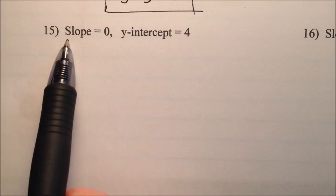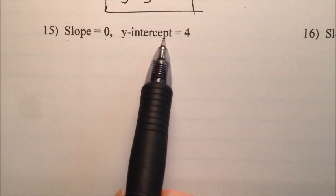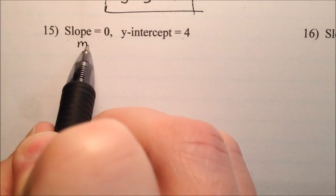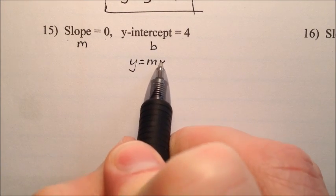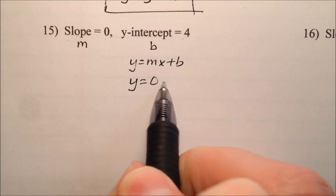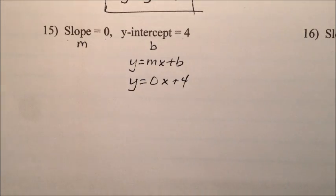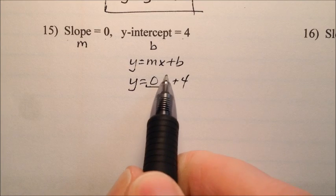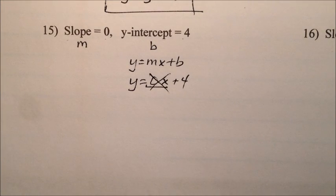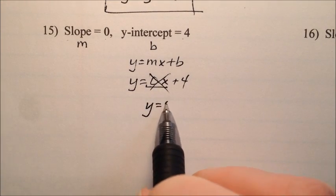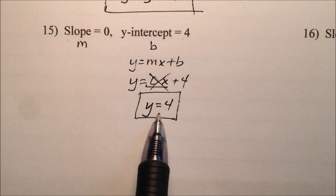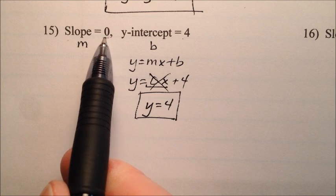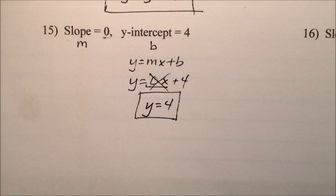In number 15, the slope is 0 and the y-intercept is 4. So m = 0 and b = 4. Putting it in y = mx + b gives y = 0x + 4, but the 0x term cancels out, so it's just y = 4. We knew it would be horizontal because the slope was 0. Number 15 is a horizontal line whose equation is y = 4.